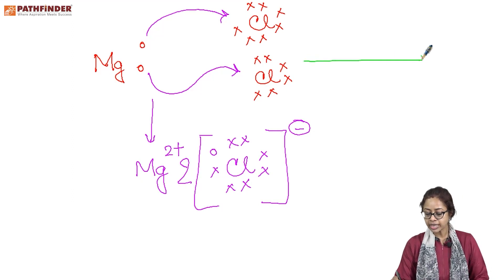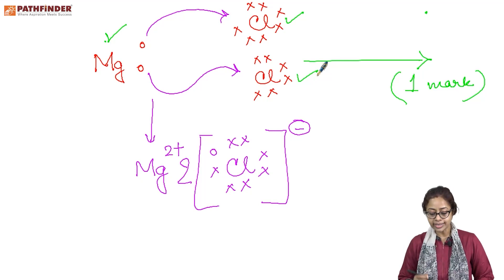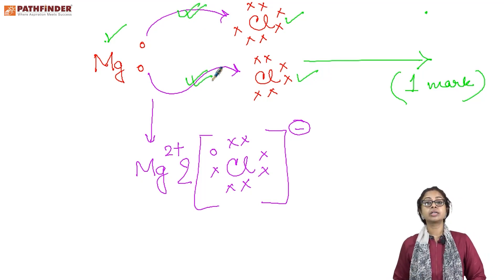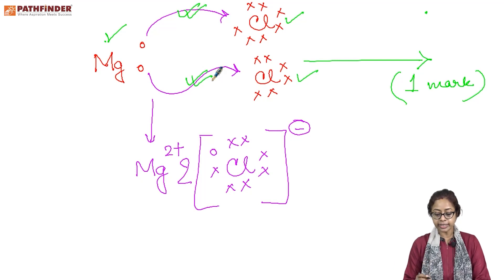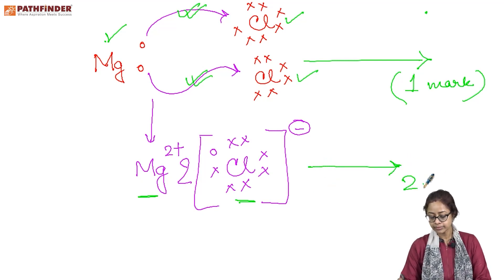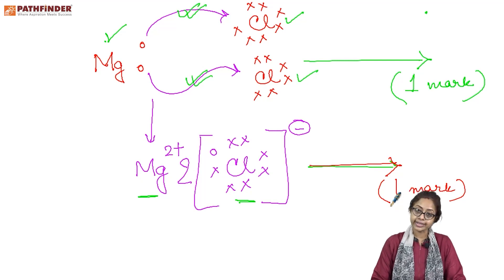For Step 1 you are awarded one mark. The points to look after are: number one, writing down the symbol of the element with the correct count of valence electrons; most importantly, showing the arrowhead from the metal to the non-metal indicating the transfer of electron; and finally showing the formation of the two correct ions, which earns your next one mark. This is how the marks are distributed for your ICSE.